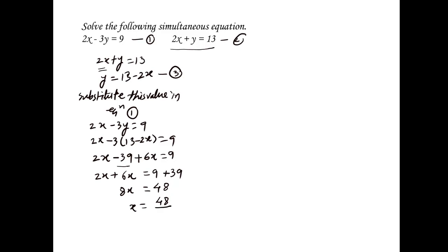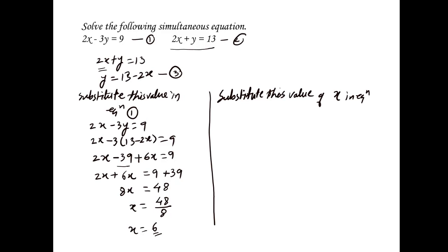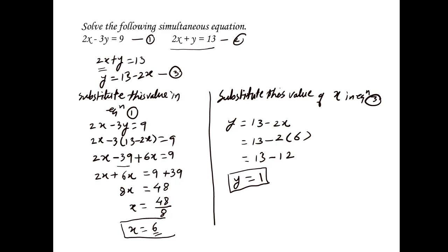So 2x plus 6x is equal to 9 plus 39. That gives 8x is equal to 48, therefore x is equal to 48 divided by 8, so x is equal to 6. Substituting x equals 6 into equation 3: y is equal to 13 minus 2 times 6, so y is equal to 13 minus 12, therefore y is equal to 1. The solution is x equals 6 and y equals 1.